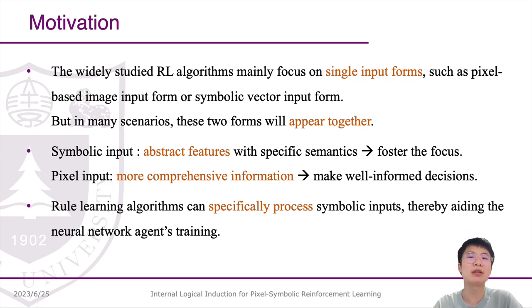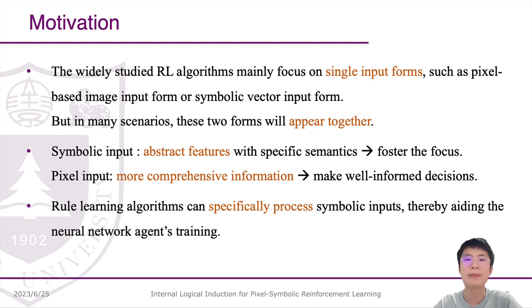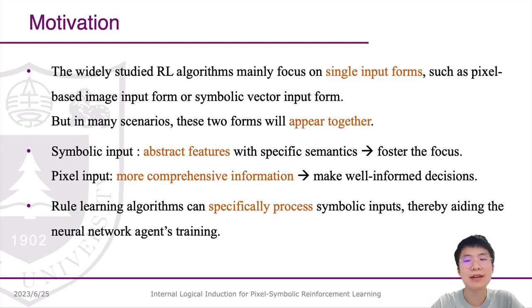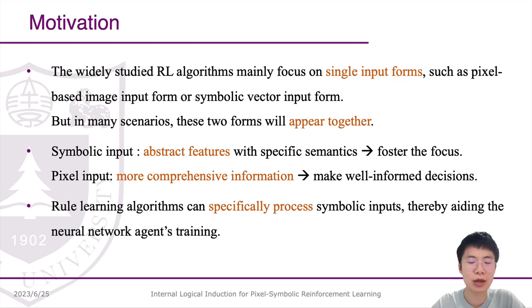But in many scenarios, these two forms with unique features will appear together. In our work, we use rule learning algorithms to process symbolic inputs, thereby aiding the neural network agents' training.